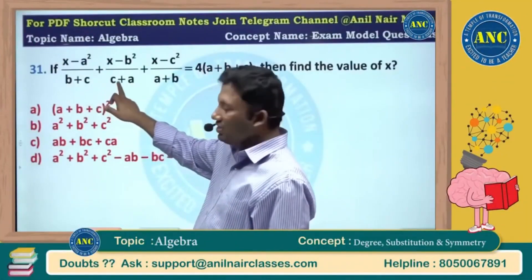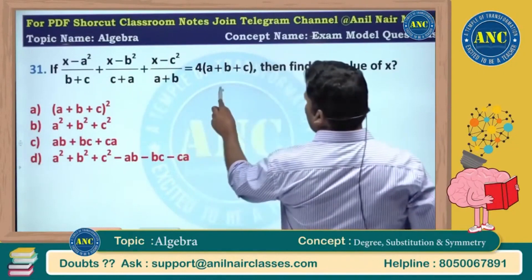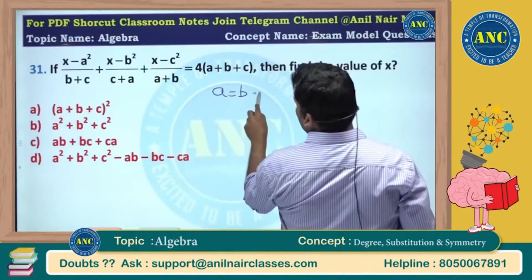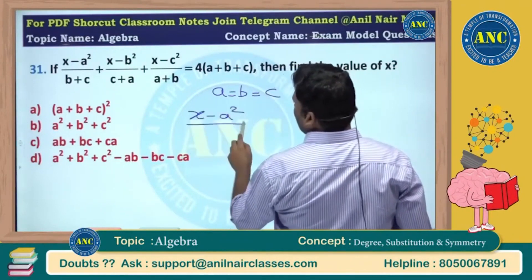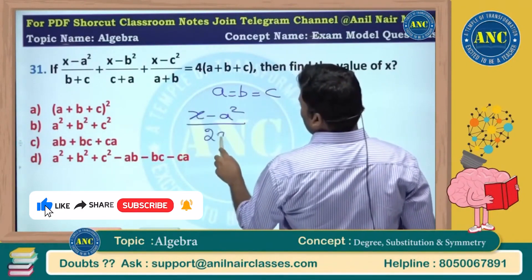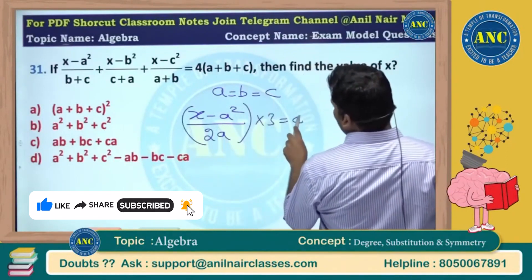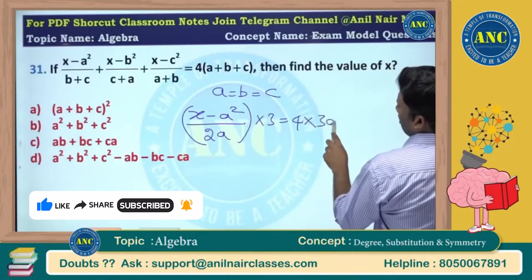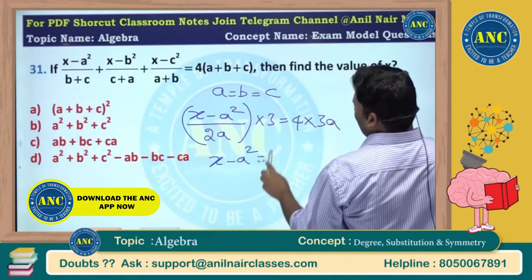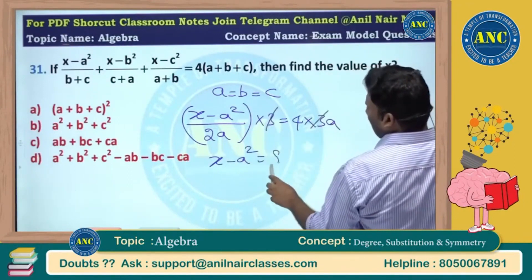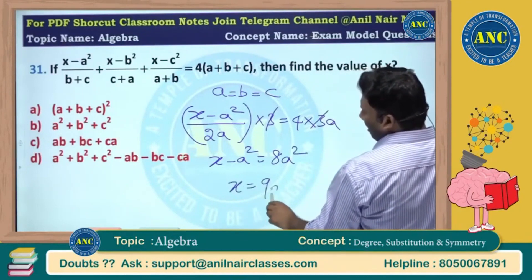b is replaced with c, c is replaced with a, so the equation does not change. Make a equivalent to b equivalent to c. Then x minus a square by a plus a gives 2a into 3, equivalent to 4 into a plus b plus c, which is 12a. So x minus a square equivalent to 3, then 3 cancel, giving 8a square, so x equivalent to 9a square.